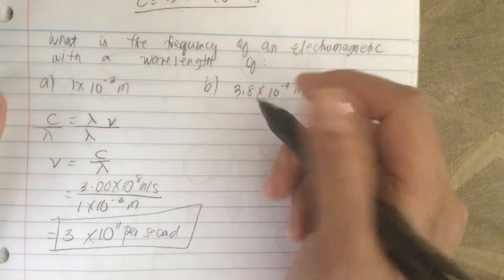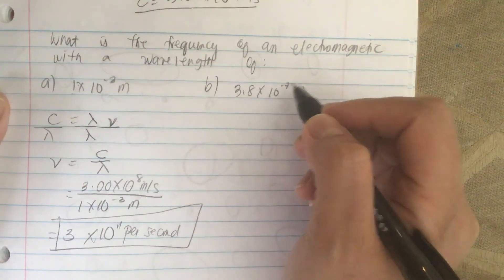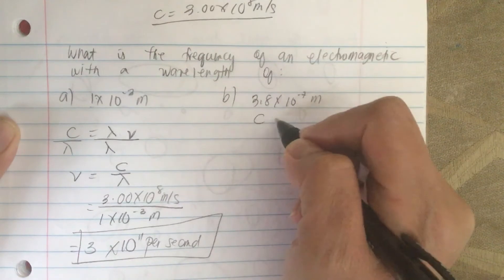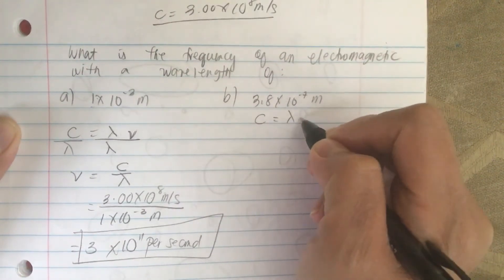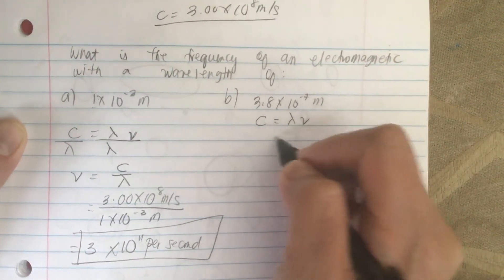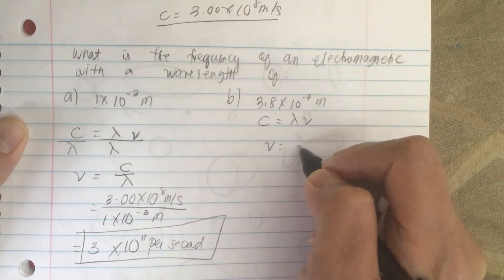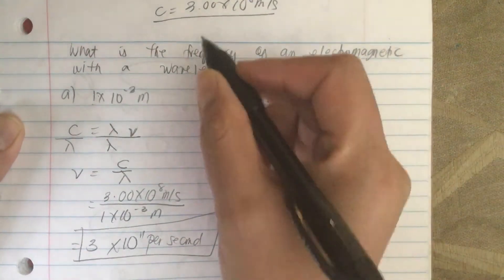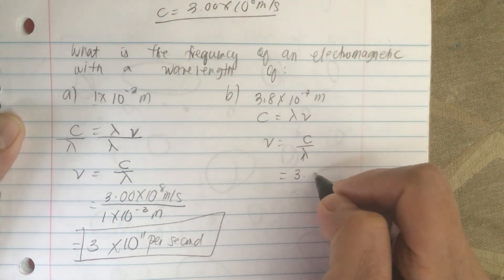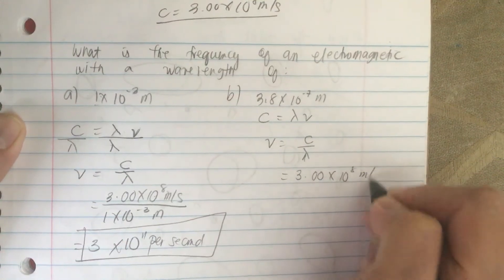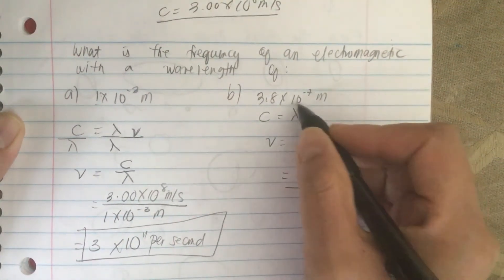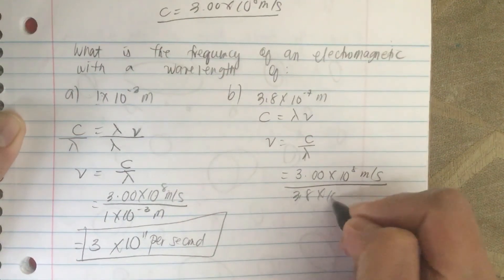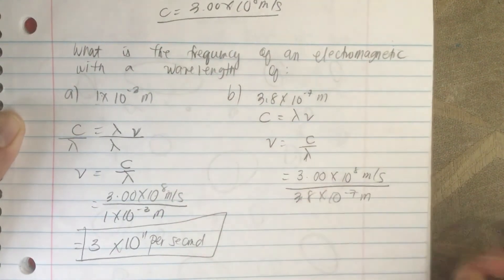Let's do part b. The wavelength is 3.8 times 10 to the minus 7 meters. The formula is the same: c is equal to the wavelength times the frequency, so frequency is equal to c over lambda. Plugging in our numbers: 3.00 times 10 to the 8 meters per second divided by the wavelength of 3.8 times 10 to the minus 7 meters.